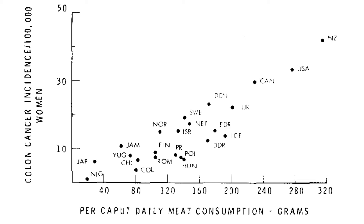On the other hand, on the very left side you can see Japan and Nigeria, which have very low per head meat consumption at the country level and quite low incidence of colon cancer among women — less than 10 per 100,000 women.